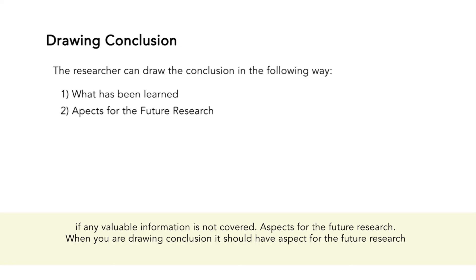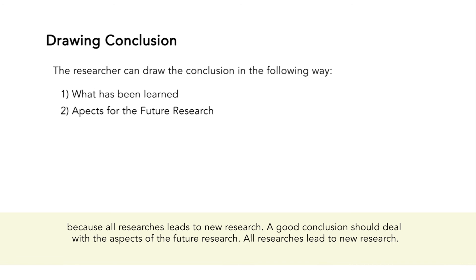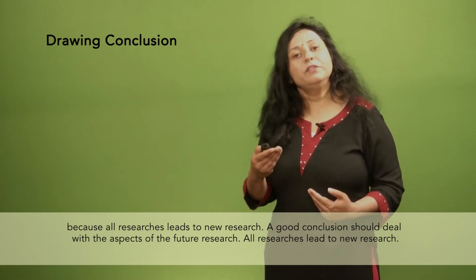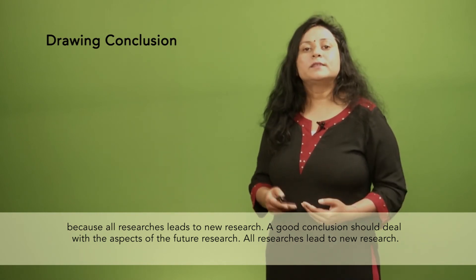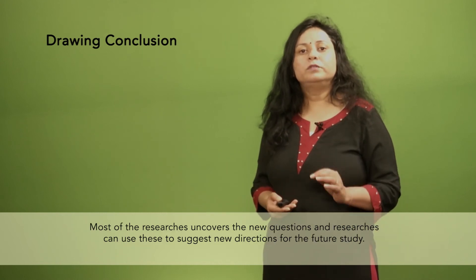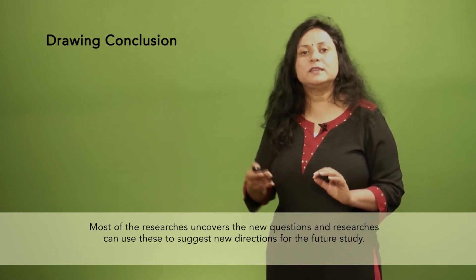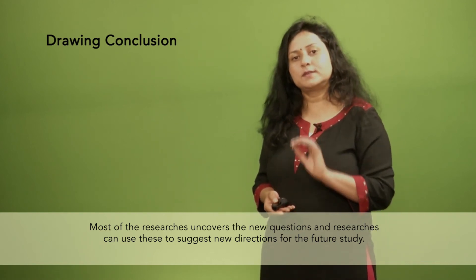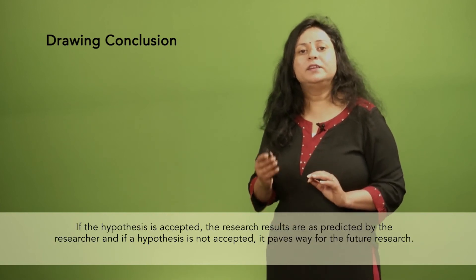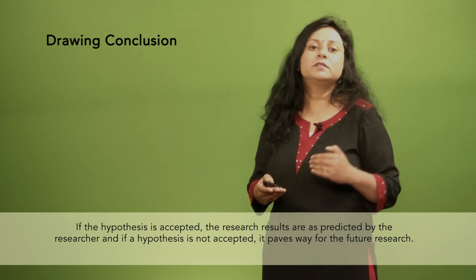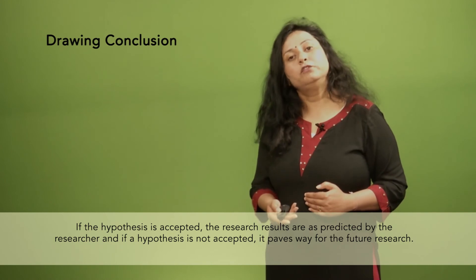The second point is aspects for future research. When you are drawing a conclusion, it should have aspects for future research because all research leads to new research. A good conclusion should deal with the aspects of future research. Most researches uncover new questions, and researchers can use these to suggest new directions for future study. If the hypothesis is accepted, the research results are as predicted by the researcher; and if a hypothesis is not accepted, it paves the way for future research.